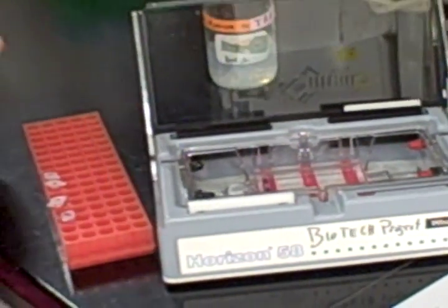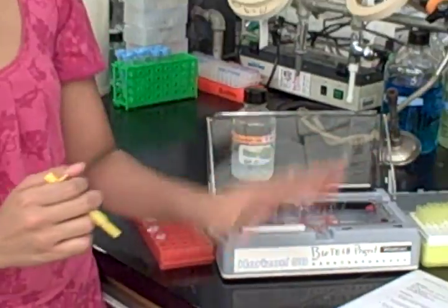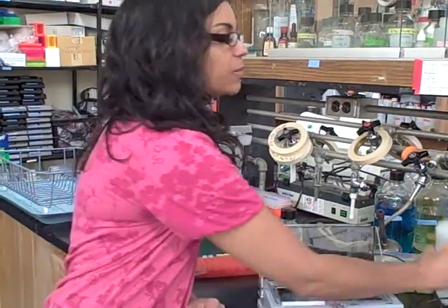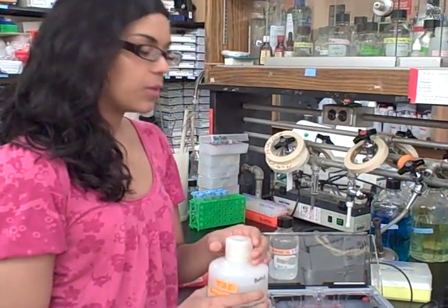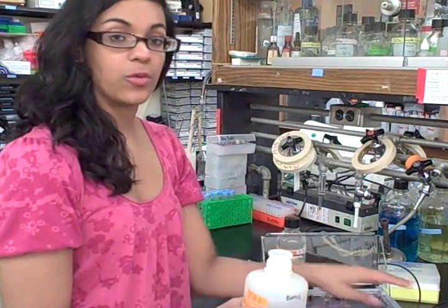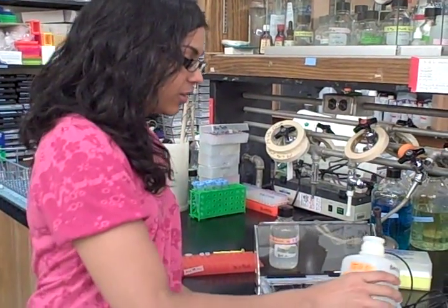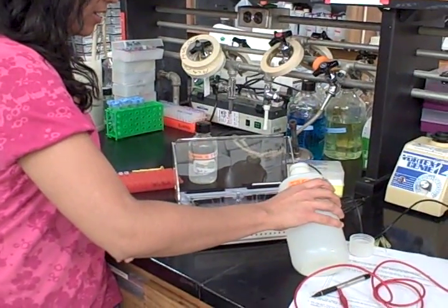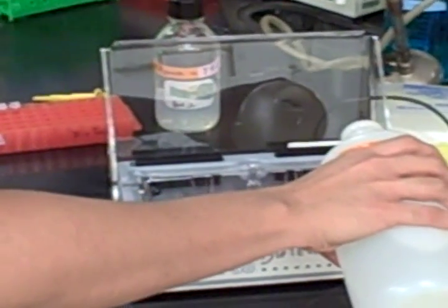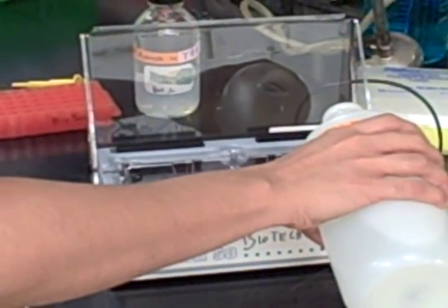Once we have all of our samples loaded and it's all properly documented, the next step is to put a buffer solution in. We want to pour this very slowly and carefully to make sure we're not displacing the sample we've already loaded into the wells. Pour from the right side, slowly and gently, just to the point that the entire gel is submerged.